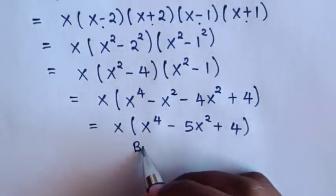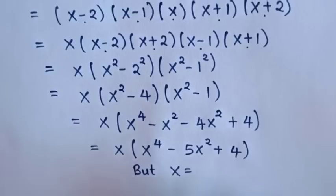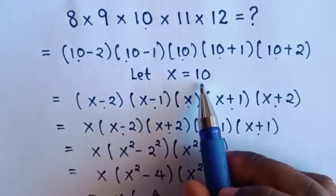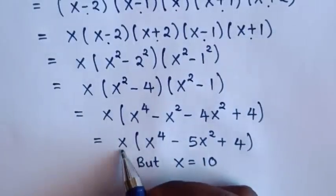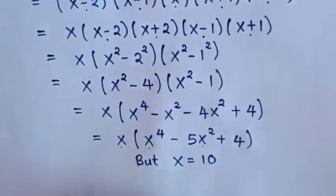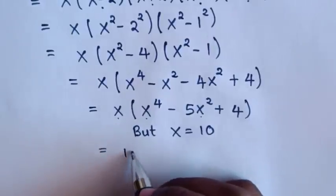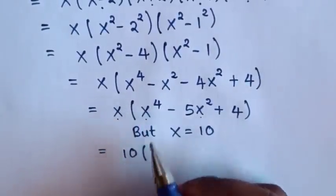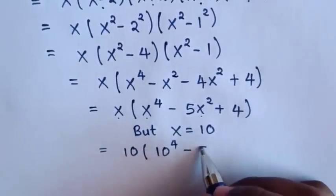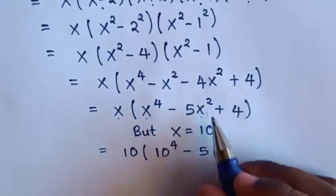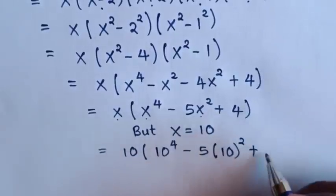But before, we already let x equal to 10, so we substitute x equals 10: it will be equal to 10 times (10 to the power 4 minus 5 times 10 squared plus 4).